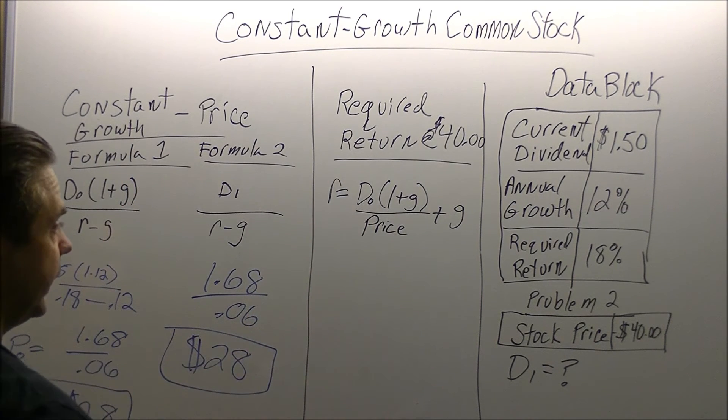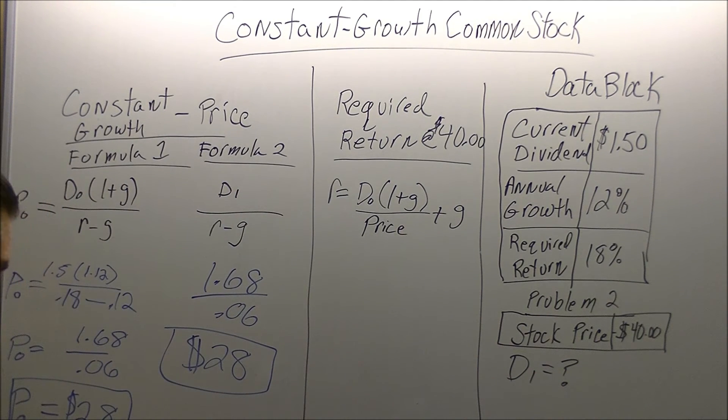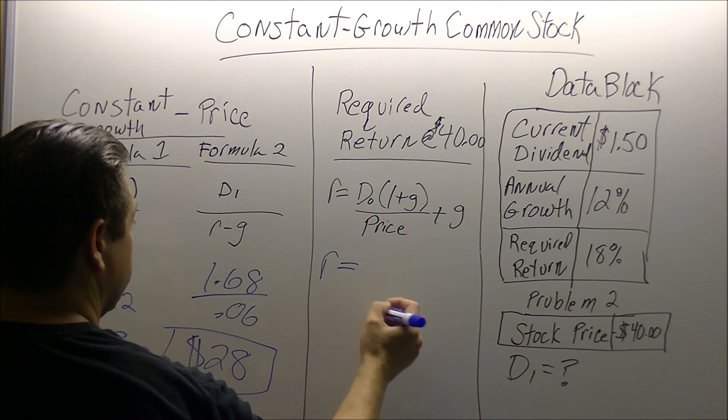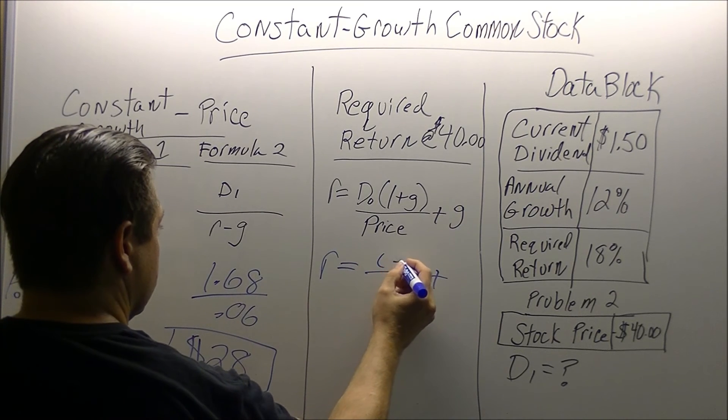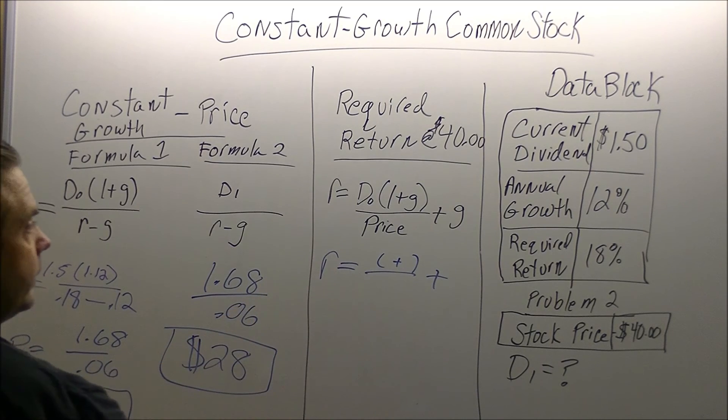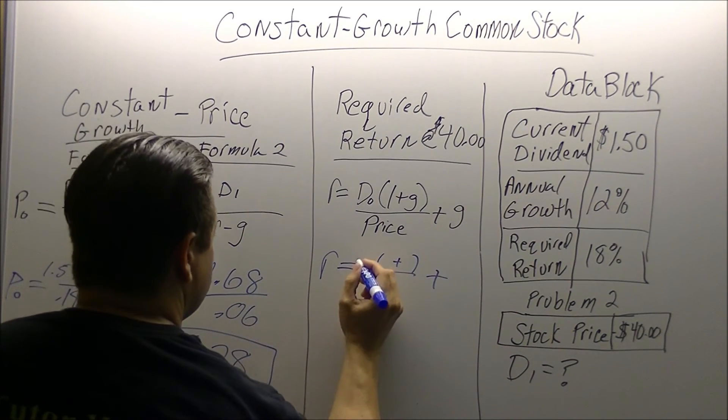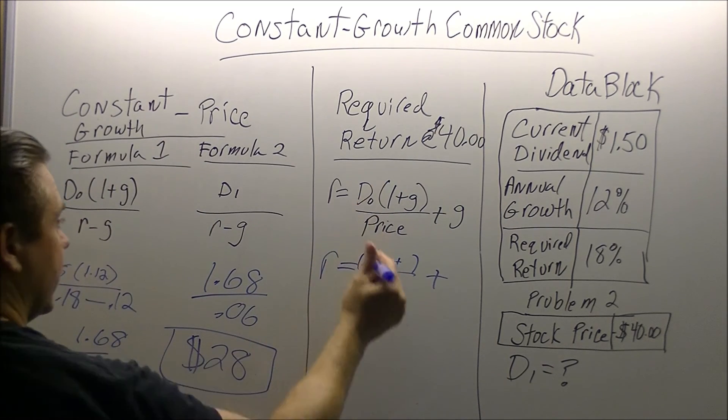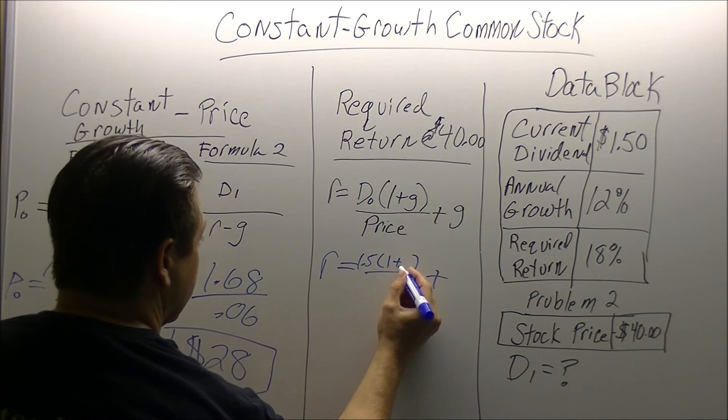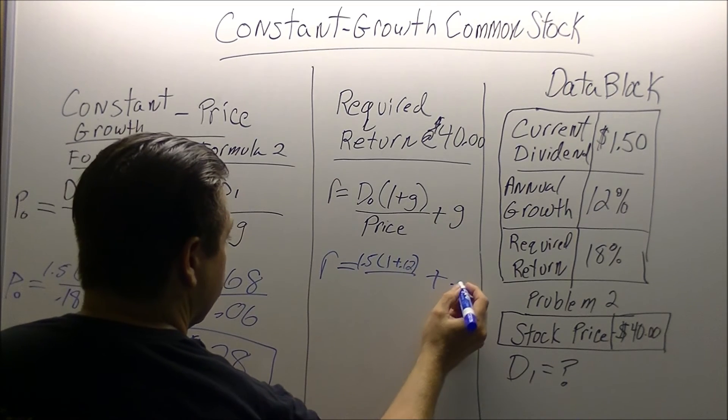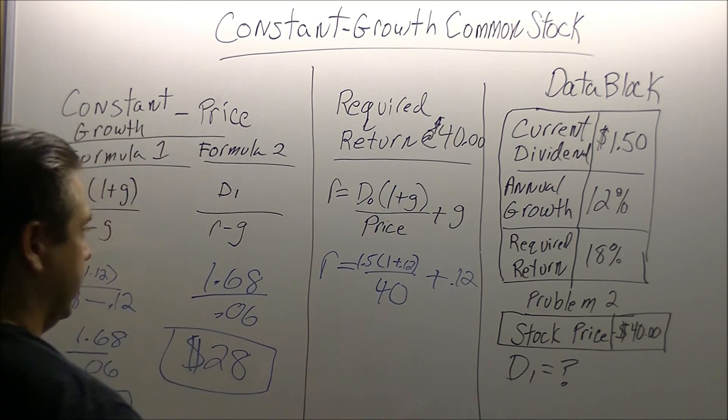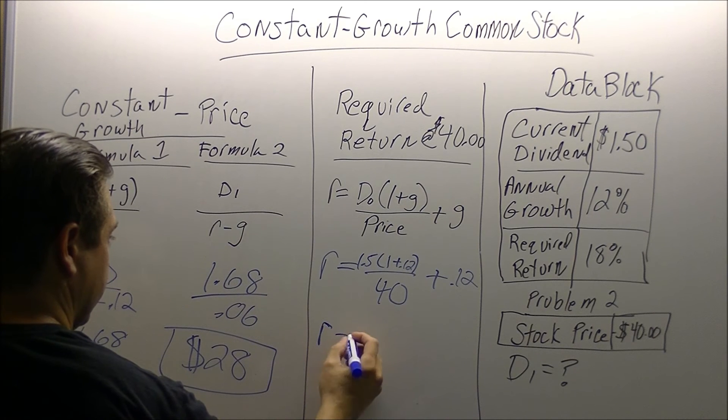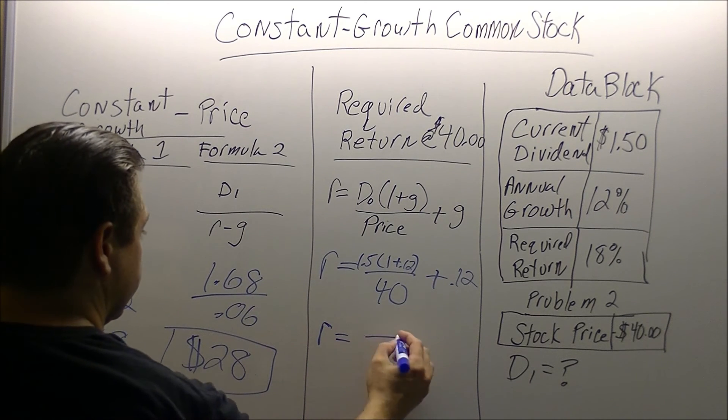Now we're going to be solving for rate. We're going to take this required rate of return and throw it out the window. We're going to substitute a new price. Problem two: stock price is $40. We're going to take the same method. Put your R there, set up your structure. Our D0 is going to be $1.50, drop our 1, and our growth is not changing, 0.12. And then we're also going to put the growth over there. Price? They give us a price of $40.